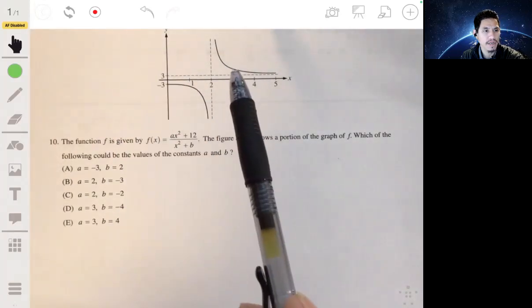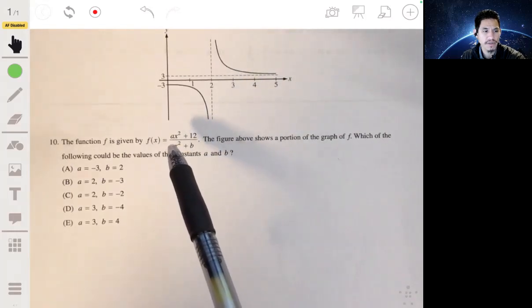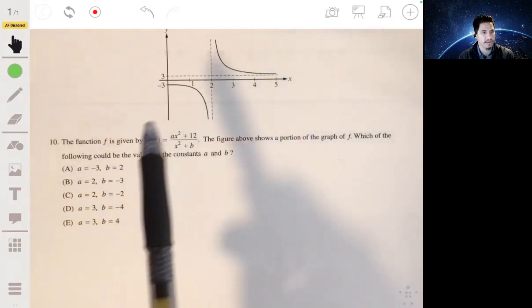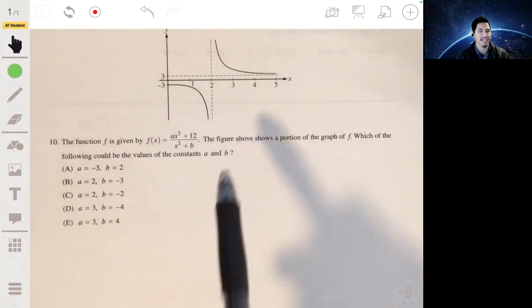All right, so problem 10. We have this graph shown here with the equation f(x) being equal to ax² plus 12 over x² plus b, and we want to figure out what could be the possible values of constants a and b.